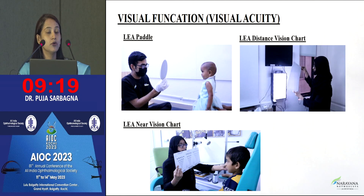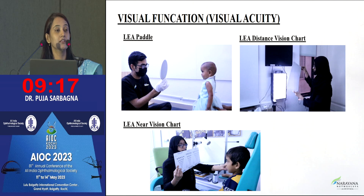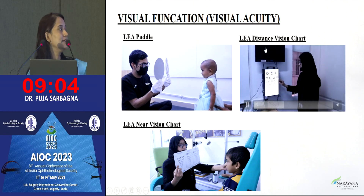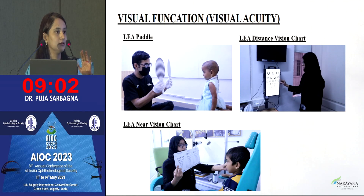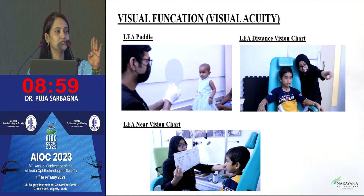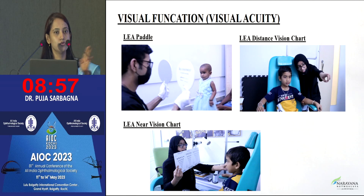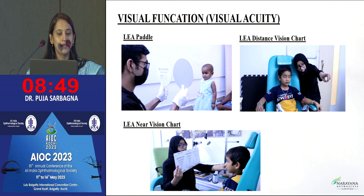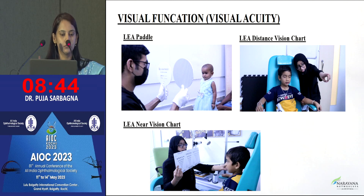In visual function assessment, for visual acuity we majorly check with the Lea Paddle, and then we introduce the Lea distance vision chart and Lea near vision chart. The Lea Paddle has grating activities — it starts with 4 paddles, from 0.25 going up to 8.0. We hide it with a gray background and show the child whether they are focusing on the black and white lines. We start from 0.25, 0.5, and slowly take it down.